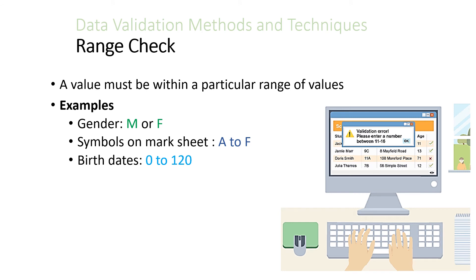A range check is when a value must be within a particular range of values. For example, a gender could be M or F, symbols on a mark sheet would be A to F, and for birth dates the acceptable range would be 0 to 120.